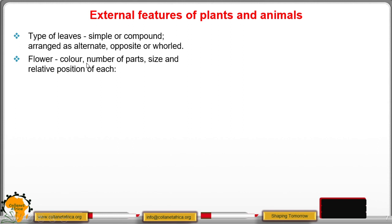You have to look at the flower color, the flower you look at the color, the number of parts of a flower. There are those that are having five parts and many others. So we have to look at the size and the relative position of each flower.